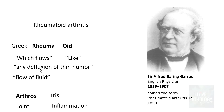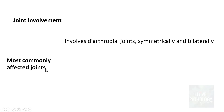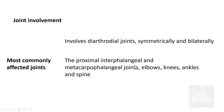Rheumatoid arthritis predominantly involves diarthrodial joints, often with symmetrical and bilateral involvement. The most commonly affected joints are the proximal interphalangeal and metacarpophalangeal joints, the elbows, knees, ankles, and spine.